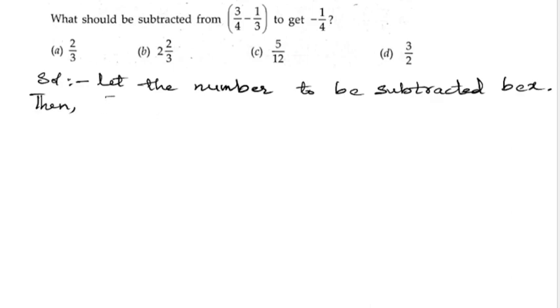We will write down that 3/4 - 1/3, from this we need to subtract x, so we will get -1/4. The LCM of 4 and 3 is 12, so here we can write 5/12 minus x equals -1/4.